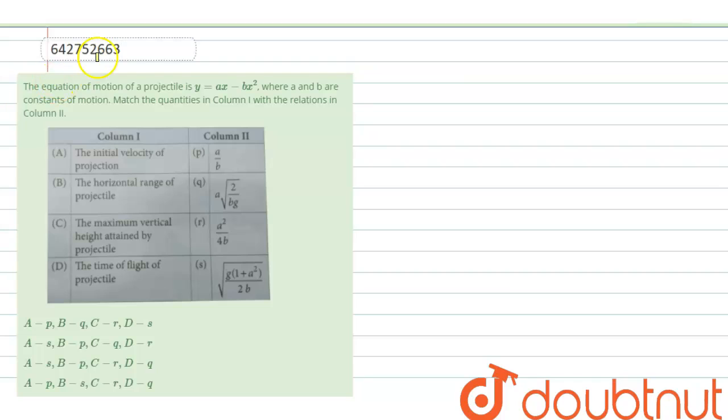Hello students. The question is: the equation of motion of a projectile is y = ax − bx², where a and b are constants of motion. Match column 1 with column 2. We have to find the time of flight, maximum vertical height, horizontal range, and initial velocity in terms of a and b.